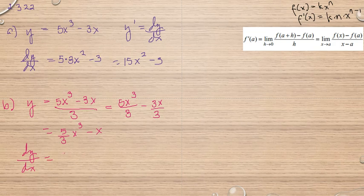Så är det 5 tredje delar, multiplicar med 3x och på 1 till 2. Och den här är också 1, så den får 5x of 1 till 2.